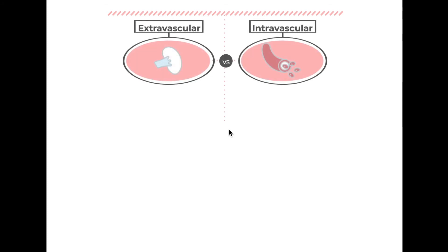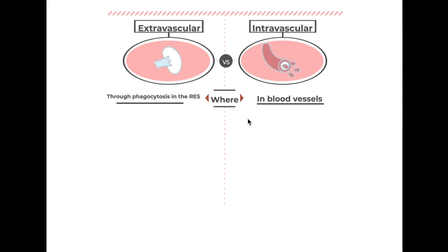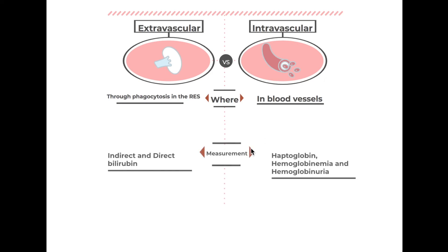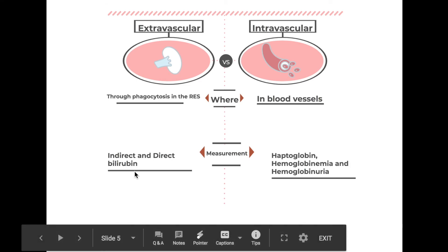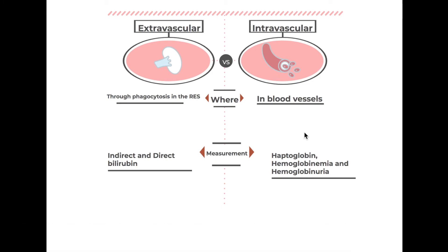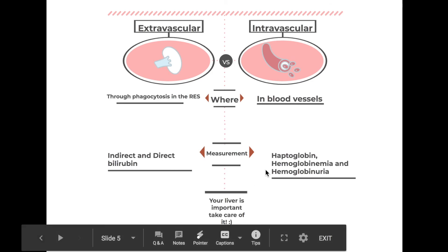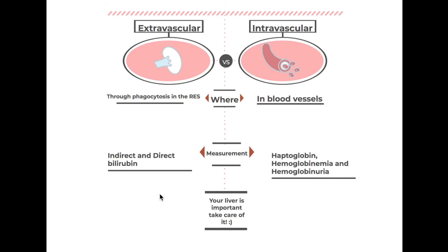To sum it all up, comparing extravascular versus intravascular hemolysis side by side: extravascular happens via phagocytosis in the reticuloendothelial system and accounts for 90%, while intravascular happens in blood vessels and accounts for only 5-10%. Extravascular hemolysis is measured through indirect and direct bilirubin in plasma, while intravascular is measured through haptoglobin levels, hemoglobinemia, and hemoglobinuria. And remember, your liver is really important — please take care of it.